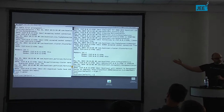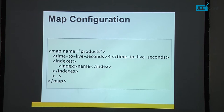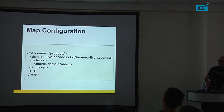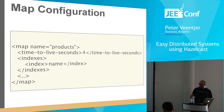We have a huge number of configurations for the map — it's the biggest and most complicated data structure we have. These are just a few options. You can configure a time-to-live — for example, all data older than an hour needs to be evicted automatically to prevent overloading the system. You can create indexes — for example, if a product has a name and you quickly want to find products by name, you create an index on it.